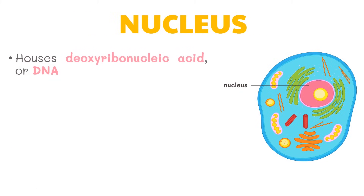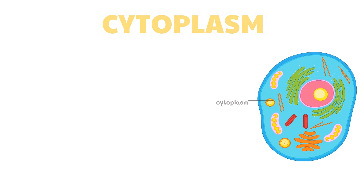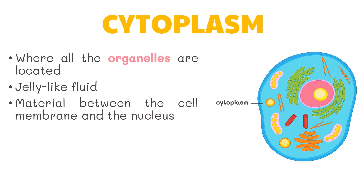The nucleus houses deoxyribonucleic acid, or DNA, which is the hereditary material that carries genetic instructions in all living things. It also houses various proteins and the nucleolus. It is considered the brain of the cell because it directs all the activities of the cell. The cytoplasm is where all the organelles are located and has a jelly-like fluid. It is the material between the cell membrane and the nucleus.